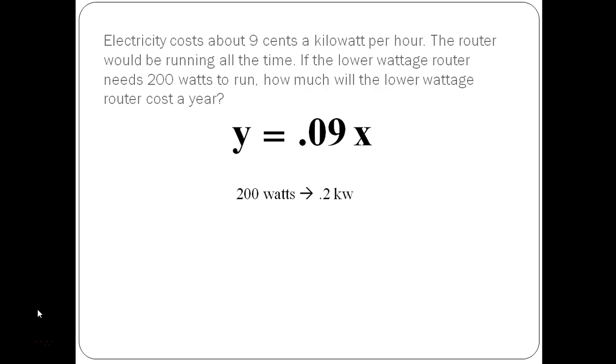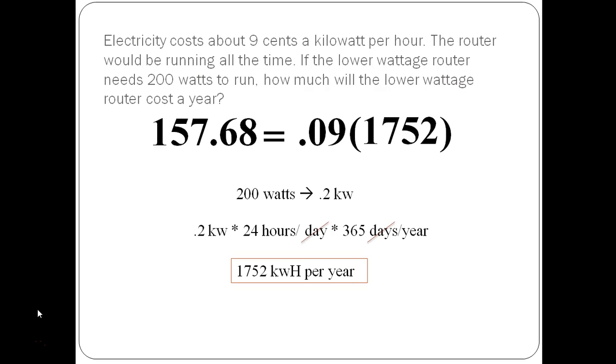So 0.2 times 24 hours in a day times 365 days in a year leaves me with the router using about 1,752 kilowatt-hours per year. 1,752 kilowatt-hours is X. 1,752 times 0.09 is $157.68. So the router is going to cost me about $158 a year. The router was going to cost $200, however the less expensive model actually used more energy, so in the long run the more expensive router was actually cheaper. A little bit of math can often save you a whole lot of money, and these are the types of problems that you will often see pop up in your everyday life.